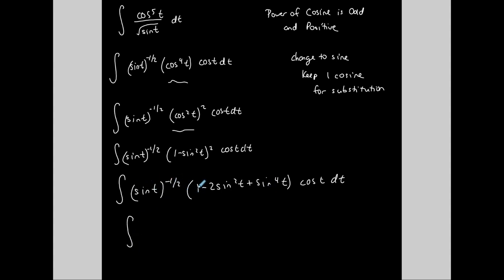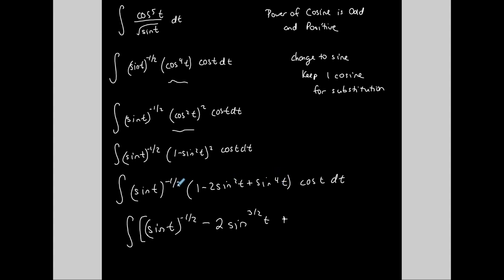Now I distribute sine t to the negative one-half through the trinomial. Multiplying: sine to the negative one-half times one stays as sine to the negative one-half; times negative two sine squared t adds exponents negative one-half plus two equals three-halves, giving negative two sine to the three-halves; times sine to the fourth adds negative one-half plus four equals seven-halves, giving sine to the seven-halves. Everything is now in terms of sine, with the extra cosine t ready for u-substitution. I separate this into three integrals.